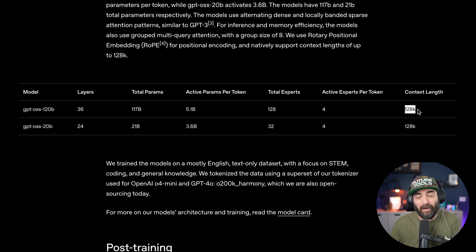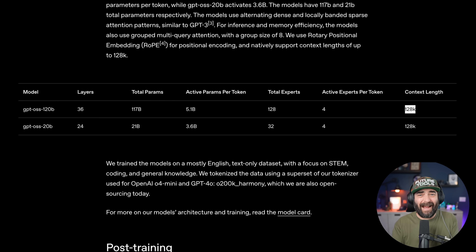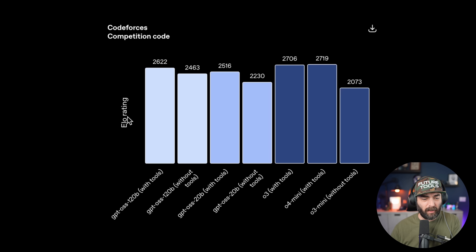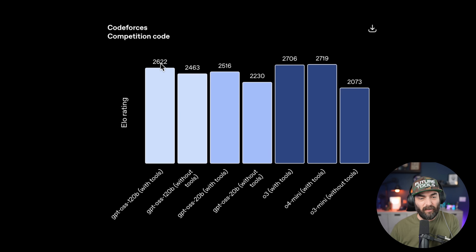It's also got a context length of 128,000 tokens, meaning between combined input and output you're going to be able to use about 96,000 words. If we take a peek at the benchmarks in the Codeforces competition code benchmark, we can see that the 120 billion parameter model got a 2,622 score.